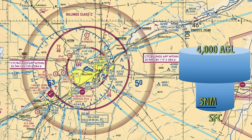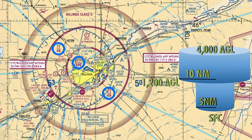The outer circle has a 10 nautical mile radius and it starts at 1,200 feet AGL going up to 4,000 feet AGL. Inside each circle you'll find the elevation of Class Charlie airspace. Here it says the bottom is 4,900 feet MSL and the top is 7,700 feet MSL. The inner circle starts at the surface and goes up to 7,700 feet MSL, which is roughly 4,000 feet AGL in this particular area.